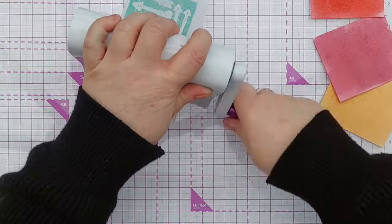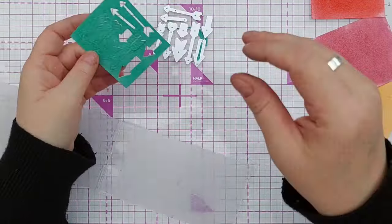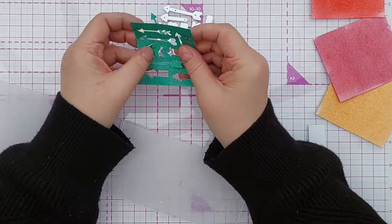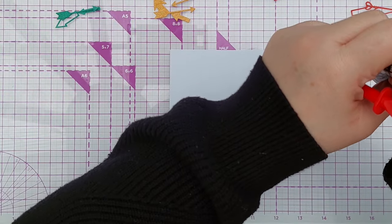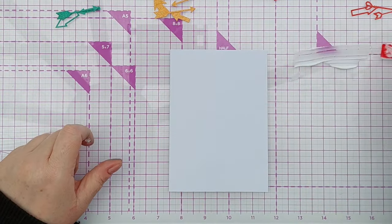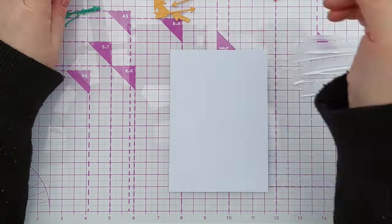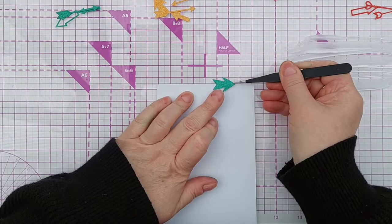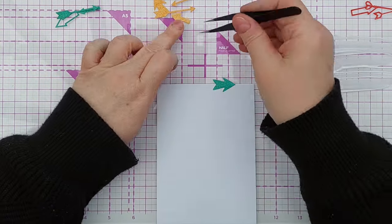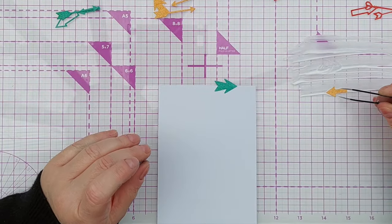So once I'd done all the panels I then ran each one through my die cutting machine with my arrow dies and then sorted them all out into color. Then I took my high tack glue and spread that across my glass mat to make it easier to pick up and all I did was dip the arrows in the glue and then run them down in a repeating color pattern down the card front alternating the direction of the arrows.